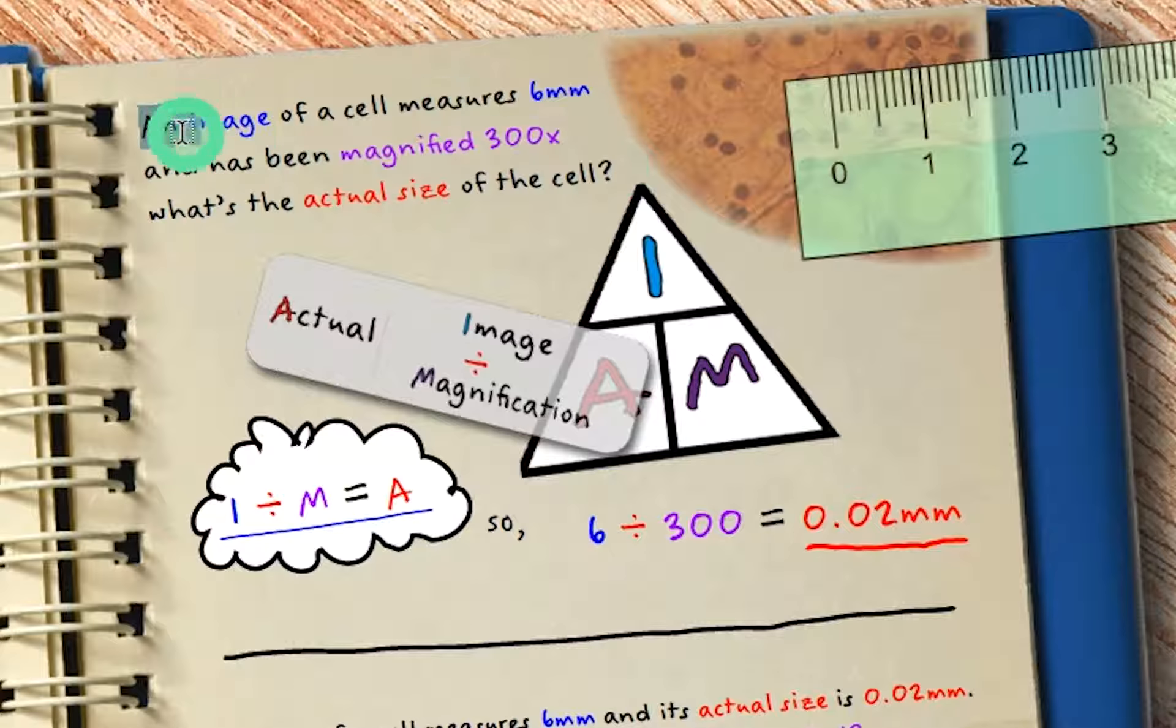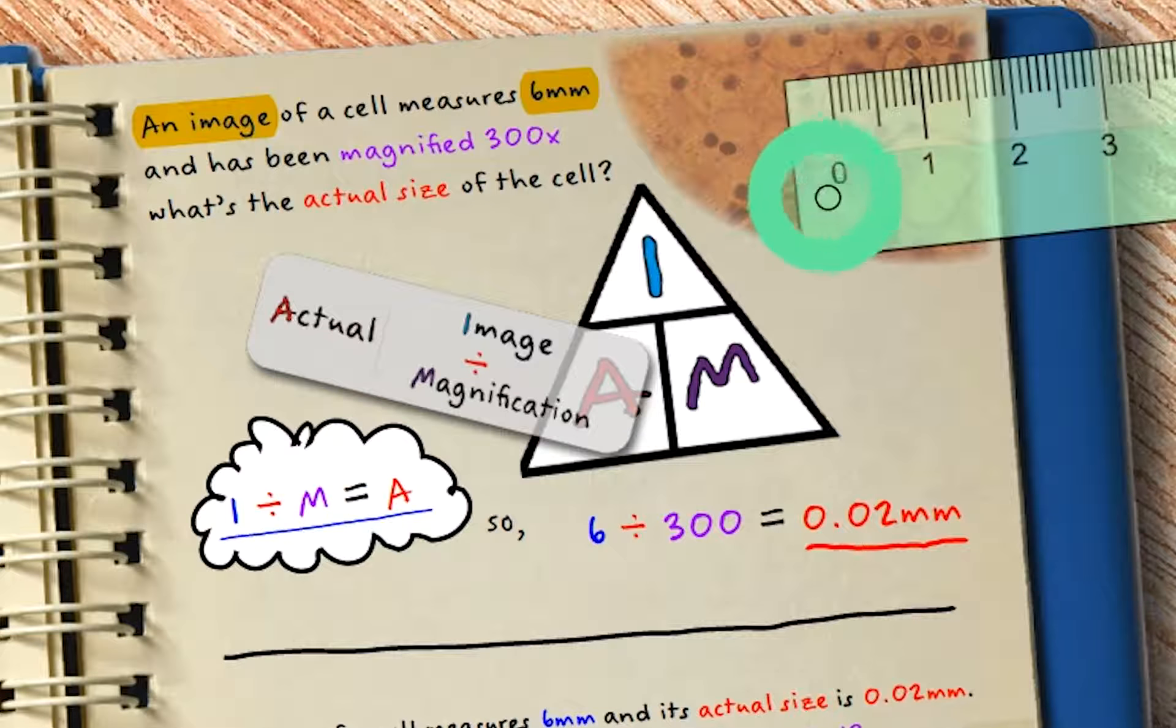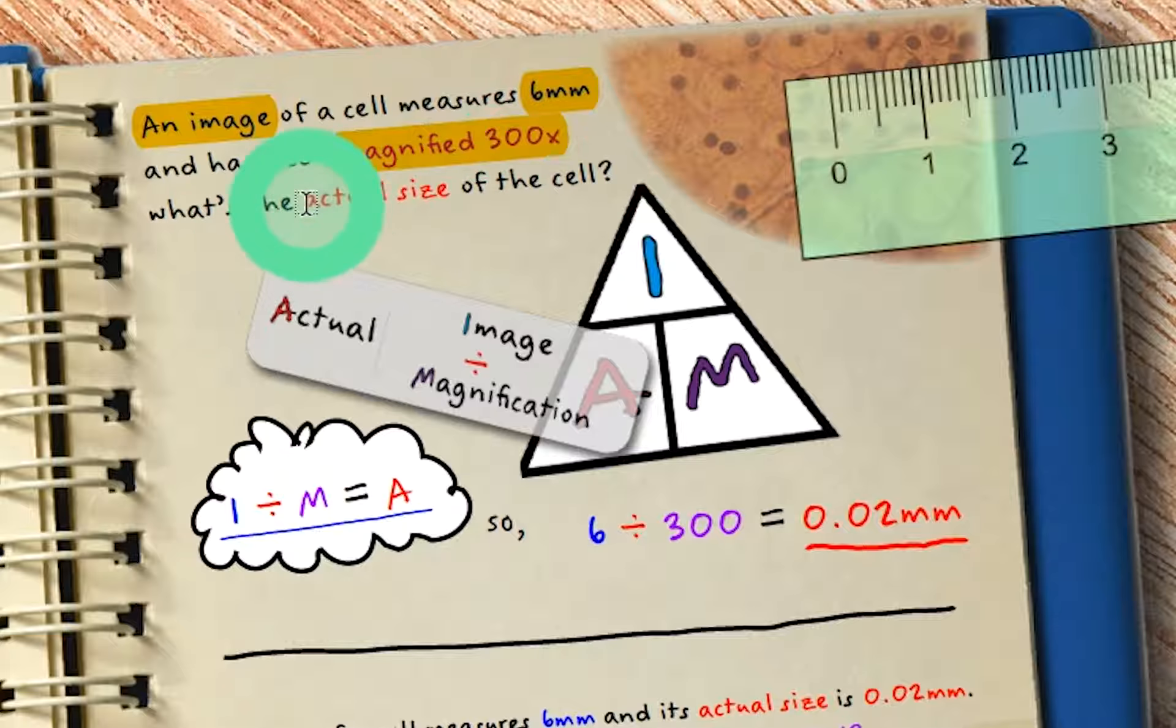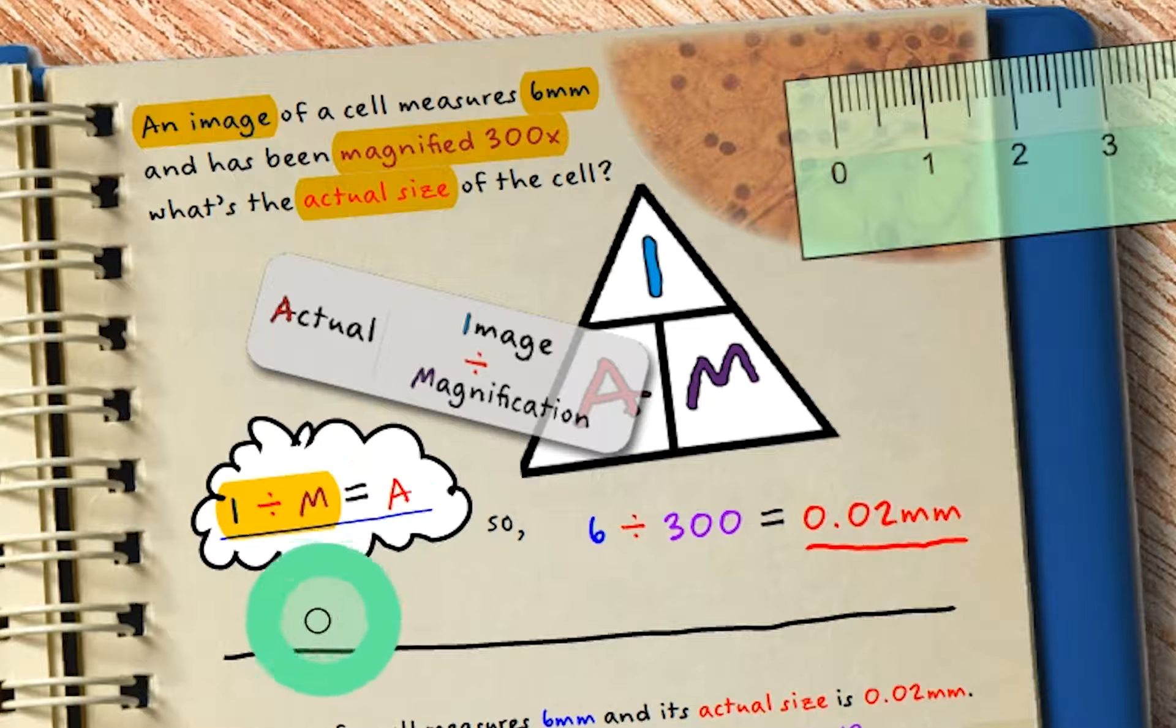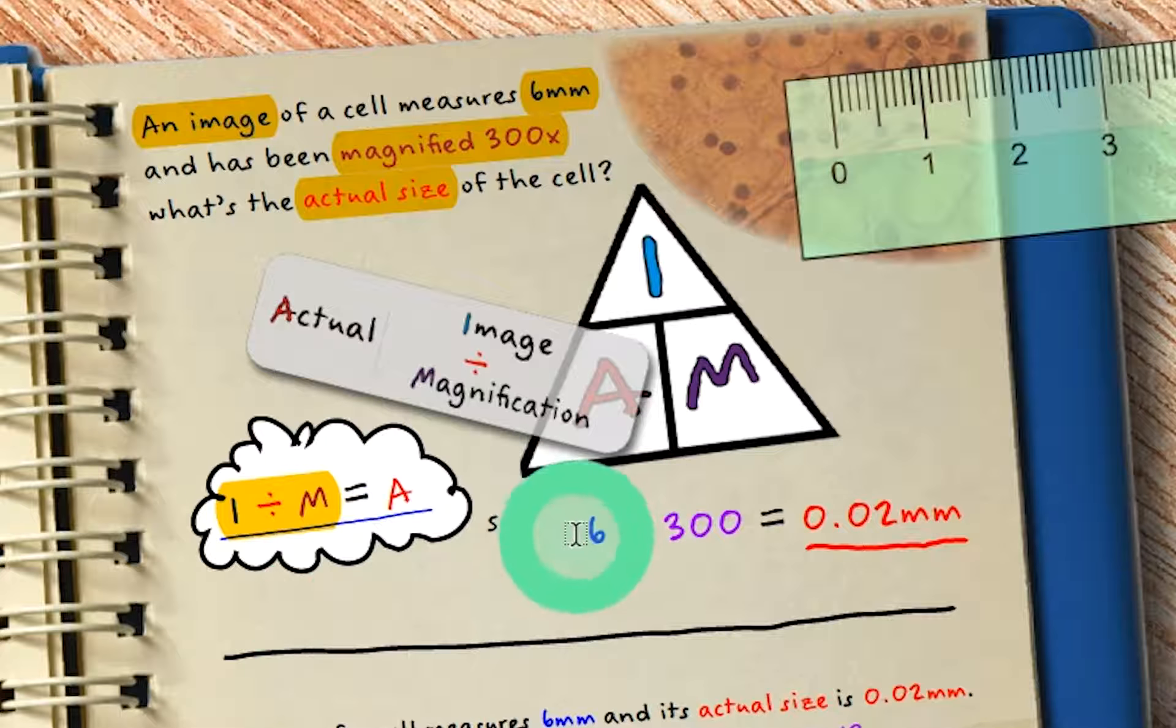Next, let's say we have an image of a cell that measures 6 millimeters and we have the magnification which is 300 times. What is the size of the actual cell? So this time we're looking for actual, so we're left with image divided by magnification. So we have 6 divided by 300, which equals 0.02 millimeters.